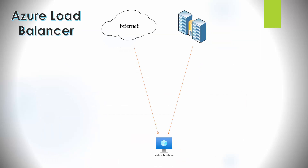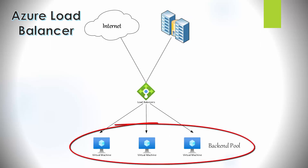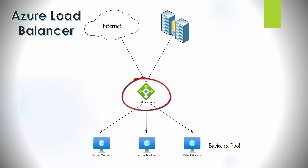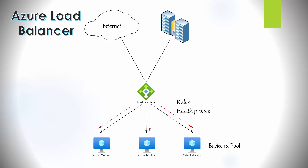To set the scene: we have a virtual machine that starts to receive too many requests from the internet, or it could be users from an on-premise office connecting to this virtual machine in the cloud. What we do is add a couple more virtual machines to help handle the traffic to the web service, and throw a load balancer in there to distribute the traffic. This is the whole purpose of a load balancer — it distributes traffic across three virtual machines so no single one is overloaded.